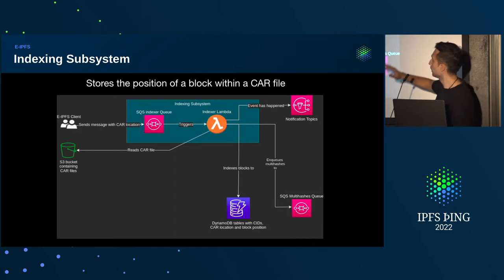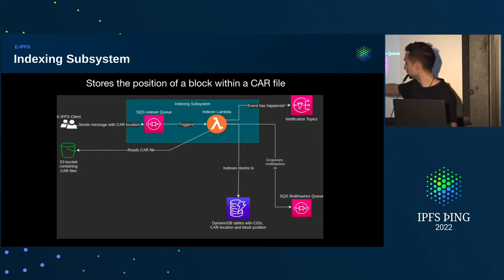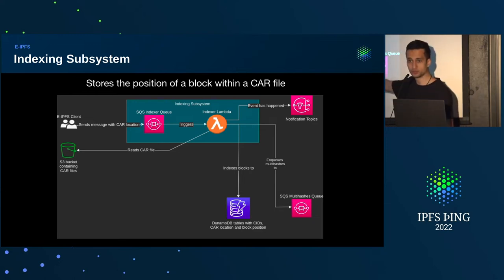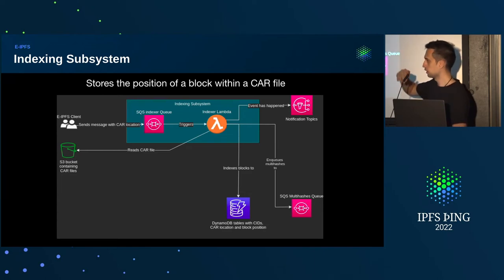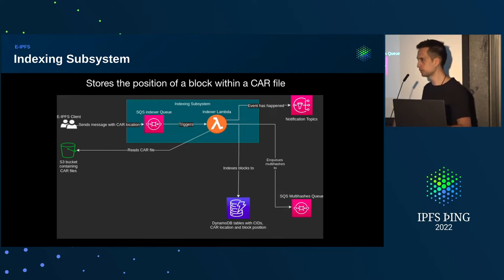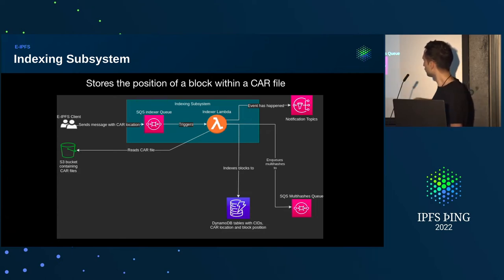Zooming in on the indexing subsystem: the objective is just reading through all of the blocks inside the car file and storing in the DynamoDB tables what the CIDs are inside that car file and what the block position is inside it, so that the peer subsystem can later read from those same DynamoDB tables and provide the actual content. As soon as that lambda is triggered, it starts reading, saving data, and sending events to notification topics — so external components can subscribe and do whatever they want — and also to a queue that connects the indexing subsystem with the publishing subsystem.